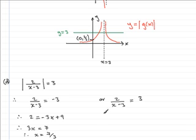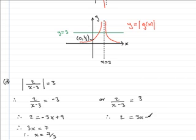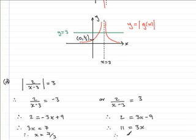Coming over to the second equation: multiplying both sides by x minus 3 gives 2 equals 3x minus 9. Adding 9 to both sides gives 11 equals 3x, and so therefore x equals 11 thirds.